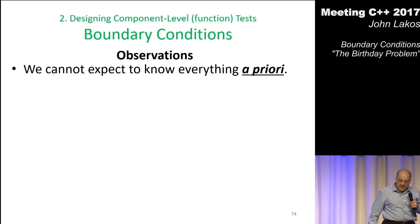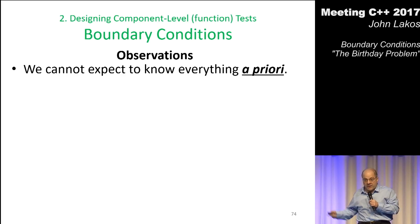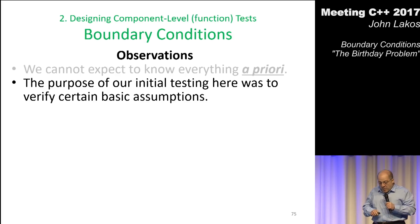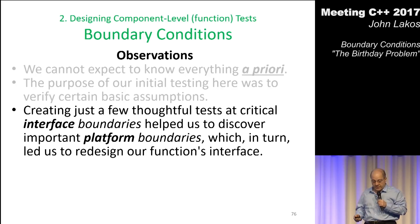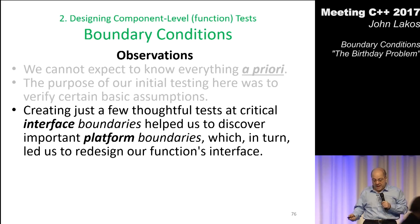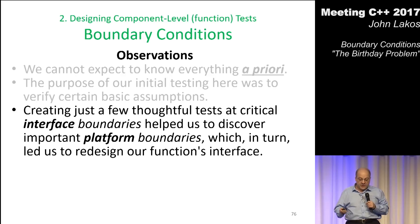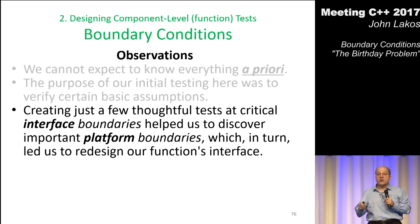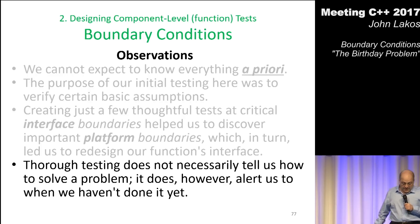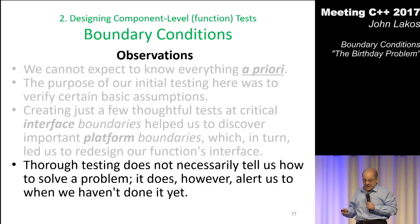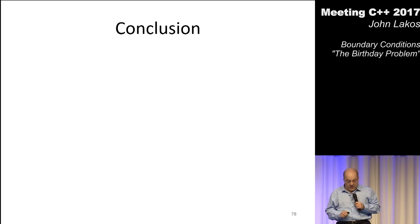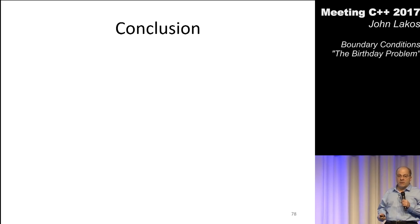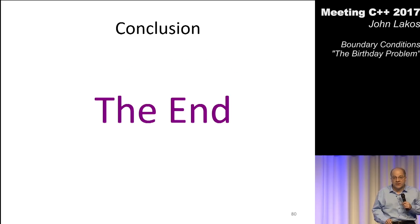The observation is: I cannot expect to know everything a priori, and I wouldn't expect anybody to know what I just showed you ahead of time. But if you write some simple tests, creating just a few thoughtful tests of critical interface boundaries helped us discover important platform boundaries, which in turn led us to redesign our function's interface. We didn't write a huge number of tests — we wrote some very specialized critical tests to confirm we were on the right track. Testing doesn't necessarily tell us how to solve problems, but it does alert us to when we haven't done so yet. The conclusion: if you have concerns about what you're doing, that's good — concerns are how you figure out how to go about testing. If you're concerned about something, write a test that verifies it does what you think. Be concerned.